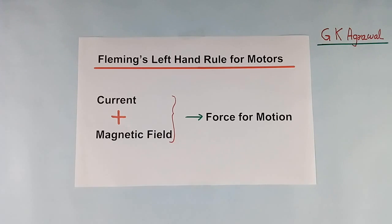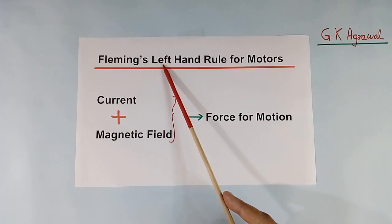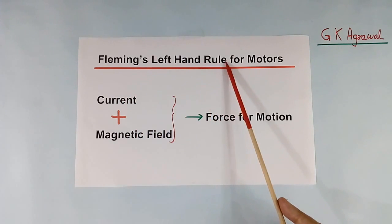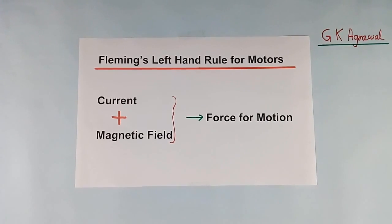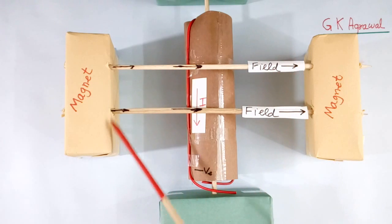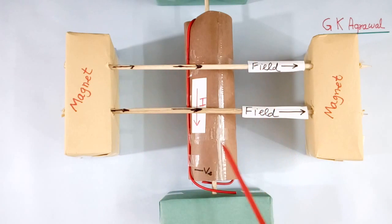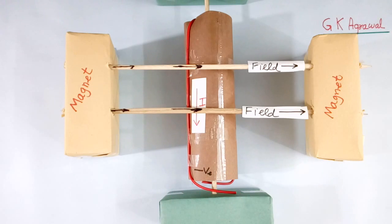Today's topic is Fleming's Left Hand Rules for Motors. I have made one model for explanation, but I will come back on this model later. First I will explain the theory.